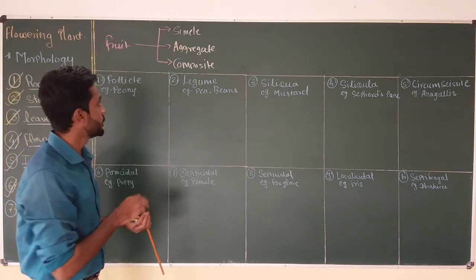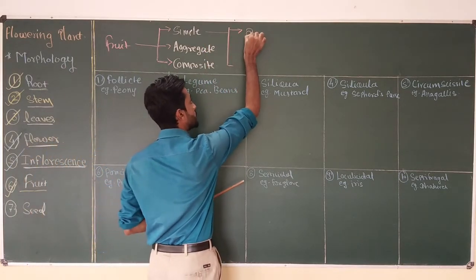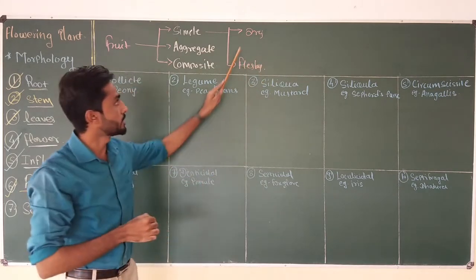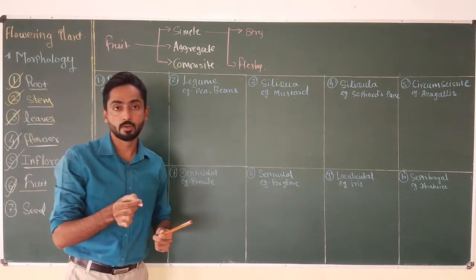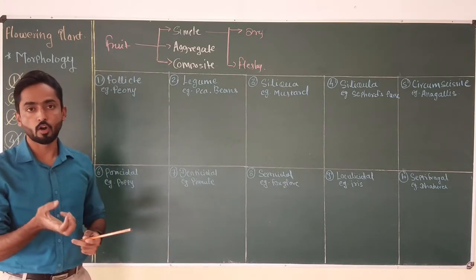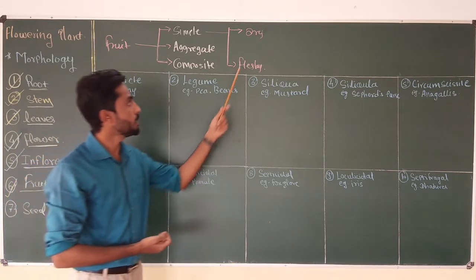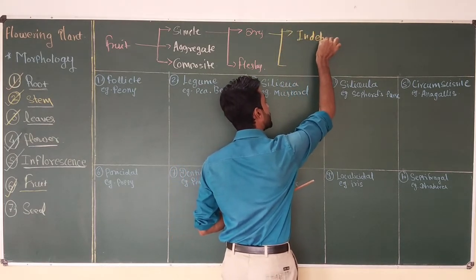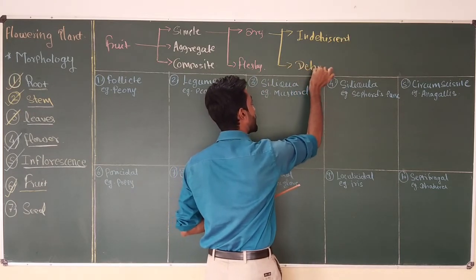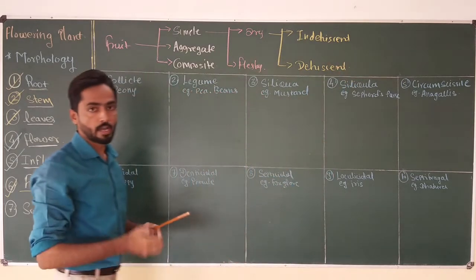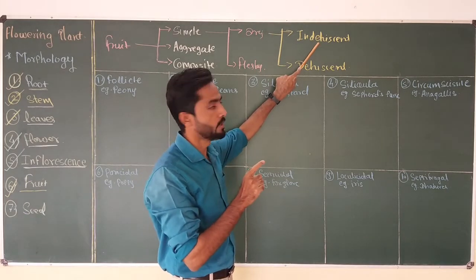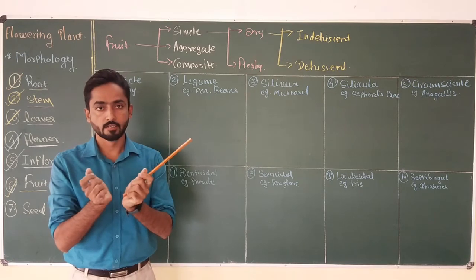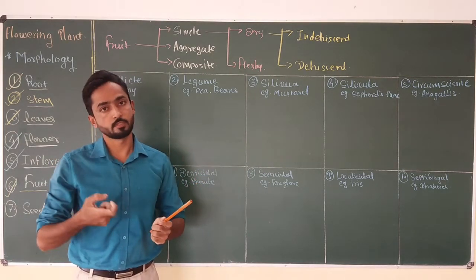Simple fruit is again divided into two subtypes: dry fruit and fleshy fruit. Dry fruits show a dry pericarp after maturity, while in fleshy fruit the pericarp or fruit wall remains juicy or fleshy after maturity. Dry fruit is again divided into two types: indehiscent and dehiscent. In the last video I discussed the five different types of indehiscent fruit, in which the fruit wall or pericarp remains intact after maturity.